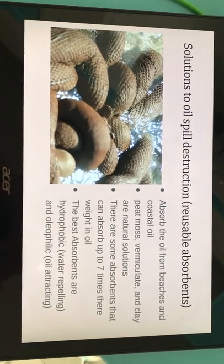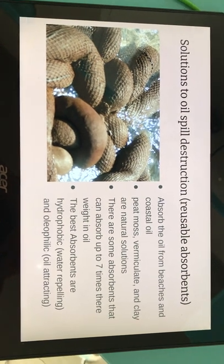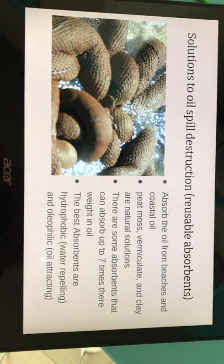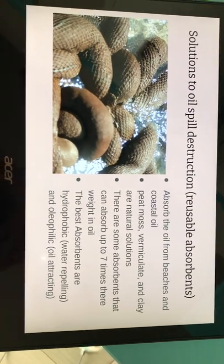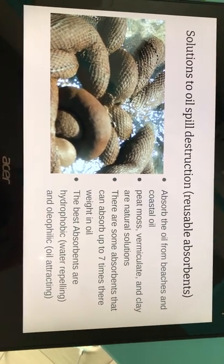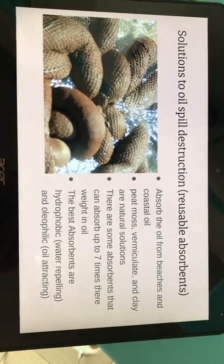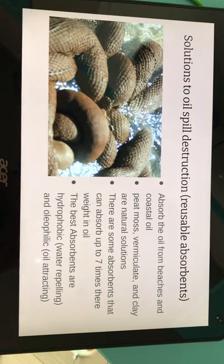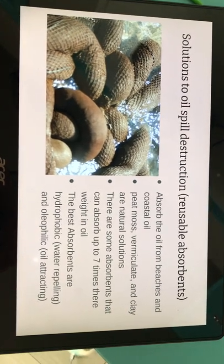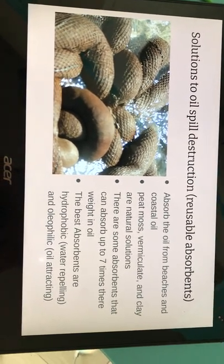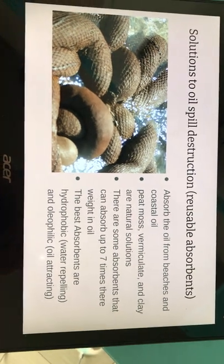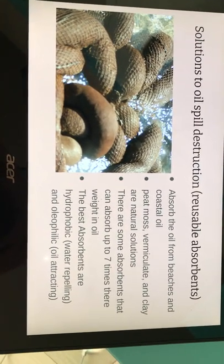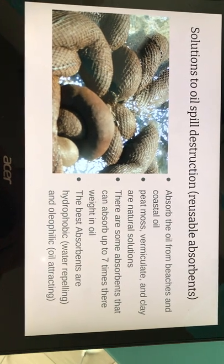Reusable absorbents are also a solution. These absorbents absorb the oil from beaches and coastal areas. Peat moss, vermiculite, and clay are natural solutions. Some absorbents can absorb up to seven times their weight in oil. The best absorbents are hydrophobic and oleophilic, meaning water-repelling and oil-attracting.